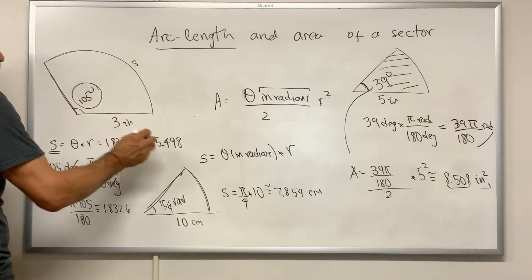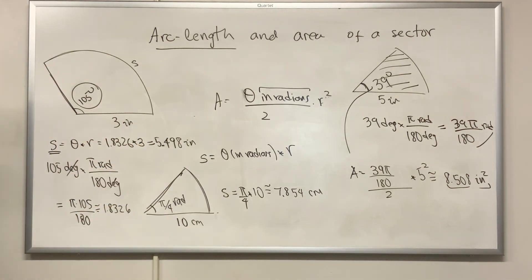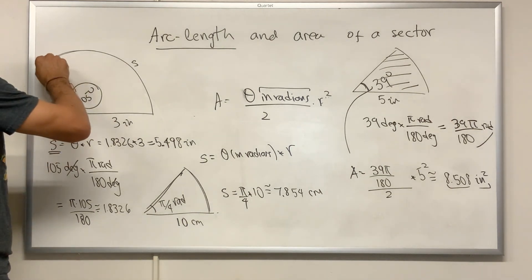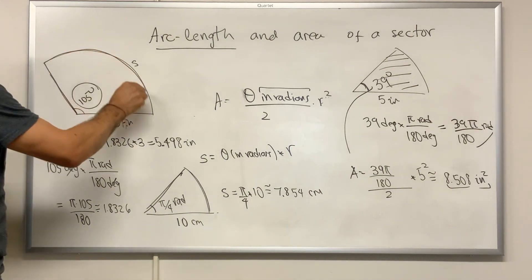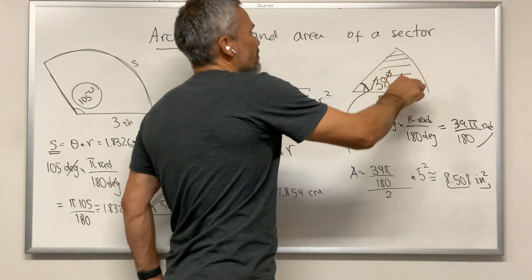If these are inches, then this will be inches as well. Okay, this is how we compute the arc length and how to compute the area of a circular sector.